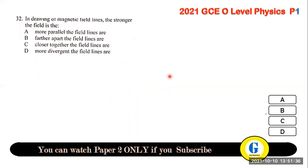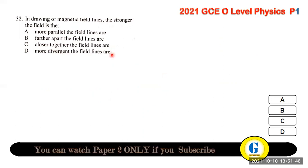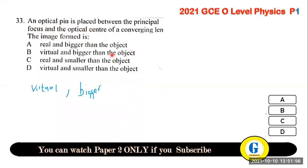Question 32: in drawing magnetic field lines, the stronger field is where the field lines are closer together — when lines are more convergent (not divergent), the field is stronger.